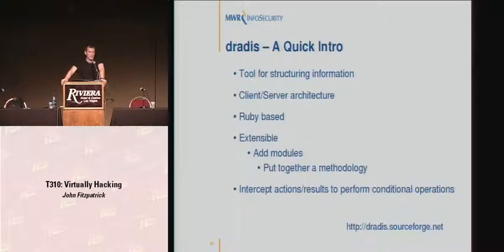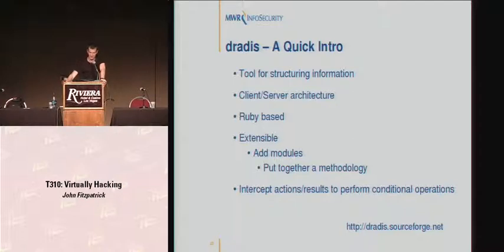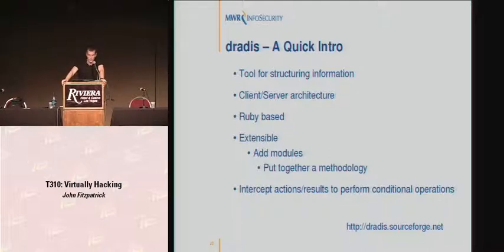Dradis works on a client-server architecture. You run the server, and anyone can connect to it, add information, read information — so multiple pen testers can use it on a pen test. It's Ruby-based and pretty extensible. I can add all my VMware modules to it nice and easily. We can use it to put together a methodology for testing VMware networks.